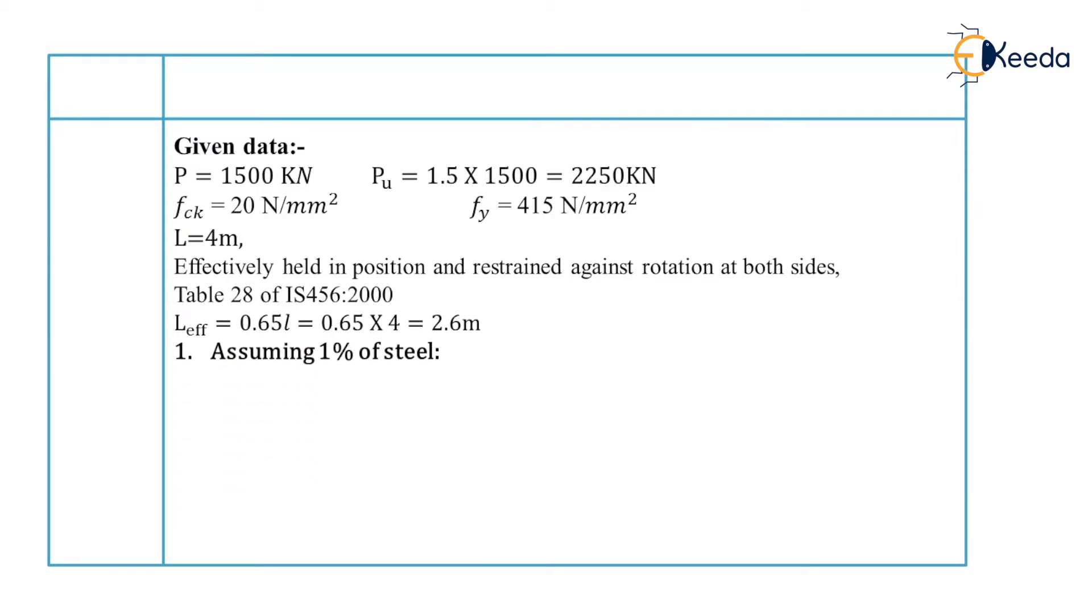Now our first step is to assume 1% of steel to find out the area of steel. So 1% of gross area which is equal to 0.01 of Ag. Number 2, area of concrete that is Ac. We know that to find out the area of concrete we have to minus area of steel from total area that is gross area. So Ag minus Asc which is equal to 0.99 into Ag.